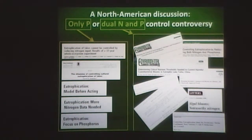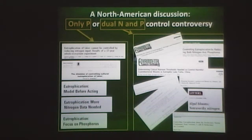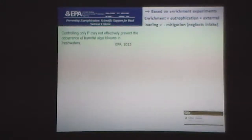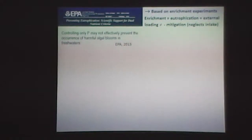I also want to touch upon an important background discussion: whether we should reduce only phosphorus, or both nitrogen and phosphorus, to control blooms. The American Environmental Protection Agency launched a document last February stating that controlling only phosphorus may not be effective in preventing harmful algae blooms in fresh water. Their claim is based on enrichment experiments — it's logical that you need all building blocks for a bloom: nitrogen, carbon, iron, phosphorus. But eutrophication is not the same as nutrient enrichment experiments — they are completely wrong there.